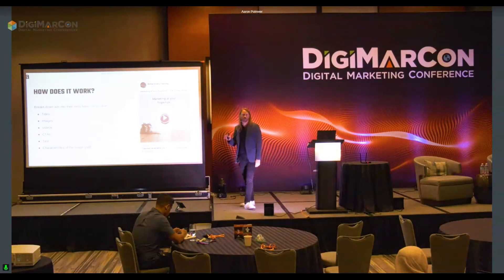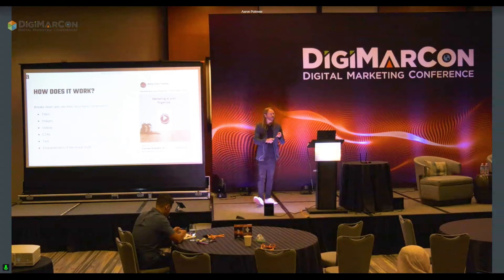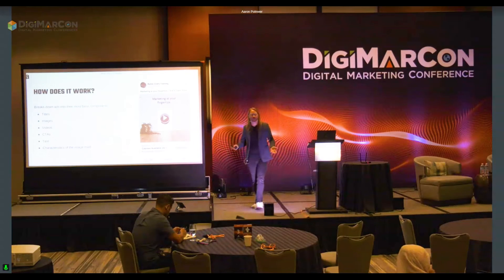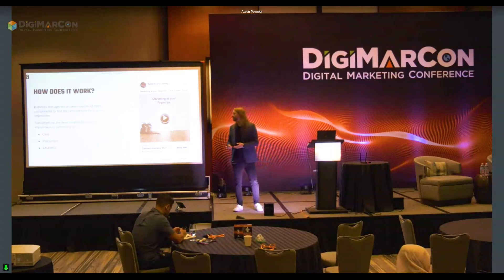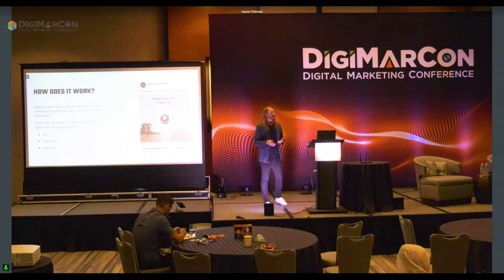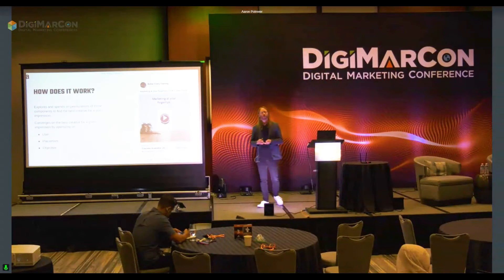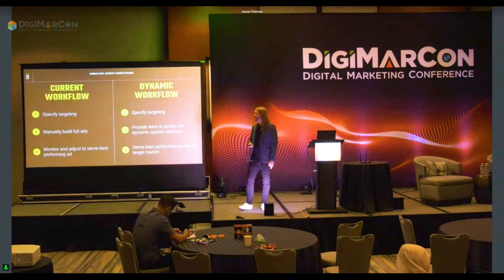How does it work? We're looking at breaking an ad into its most basic components — titles, images, videos, calls to action, text — any characteristic of the ad itself. And then the system is exploring and spending on these ads for any given impression, looking at different users and the different placements or objective types you're running.